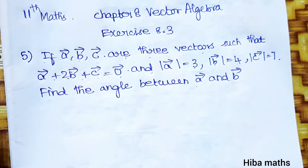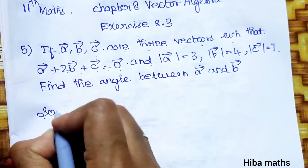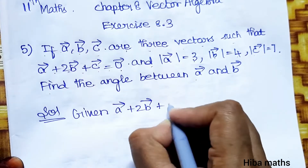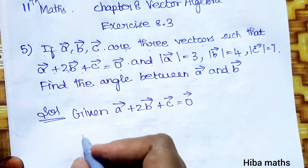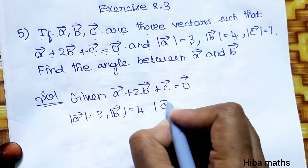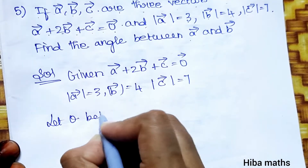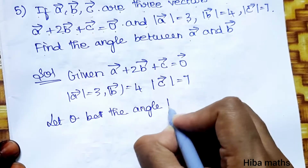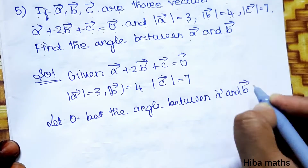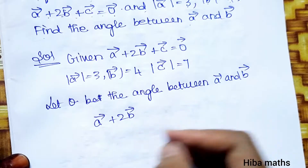Let's look at the solution. Given: a vector plus 2b vector plus c vector is equal to zero vector. Modulus of a vector is 3, modulus of b vector is 4, modulus of c vector is 7. Let theta be the angle between a vector and b vector.